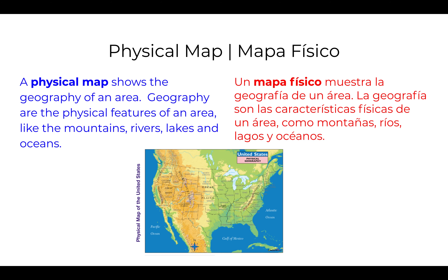A physical map shows the geography of an area. Geography are the physical features of an area, like the mountains, rivers, lakes, and oceans. Un mapa físico muestra la geografía de un área. La geografía son las características físicas de un área, como montañas, ríos, lagos, y océanos.